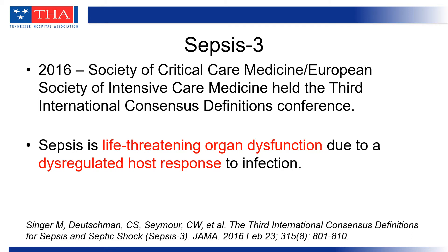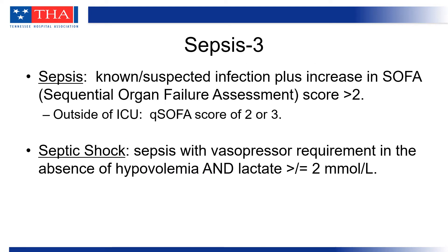In 2016, everything changed. There was a third consensus conference, and the definition of sepsis was changed significantly. It is now defined as a life-threatening organ dysfunction due to a dysregulated host response to infection. The categories of sepsis were also changed — now instead of three categories there are two, with sepsis being defined as a known or suspected infection plus an increase in SOFA score greater than 2, and septic shock requiring not only vasopressor requirement in light of persistent hypotension following fluid resuscitation, but also an elevation in lactate.